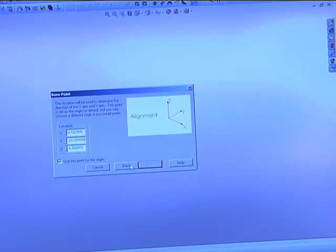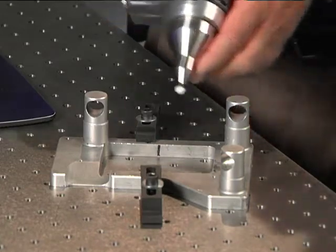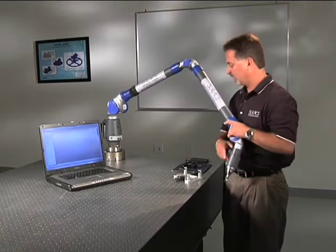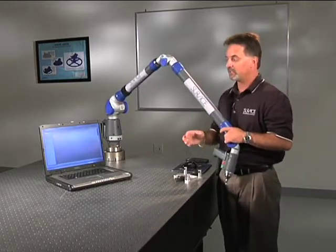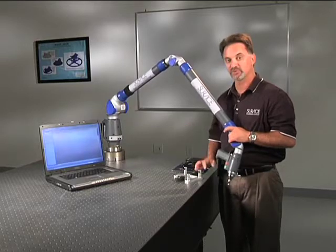First thing I'm going to do is create an alignment. This ties a basic coordinate system to my part. Now once I've created an alignment, I'm basically going to outline the part and build this part from the base features up.